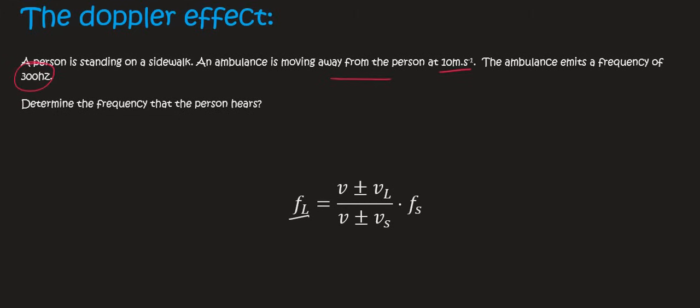Since the ambulance is moving away, we use a minus at the top and a plus at the bottom. We do this because we're trying to make the frequency of the listener become lower than the original 300 hertz. Let me draw this: here's an ambulance with the siren, moving this way.